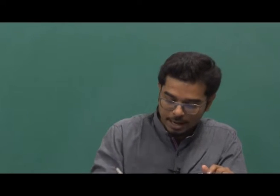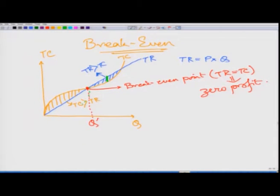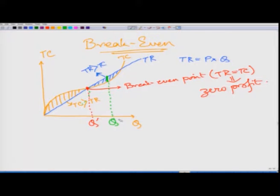The vertical distance between total revenue and total cost is highest at the output level Q* — or Q_p — where my profit is highest.